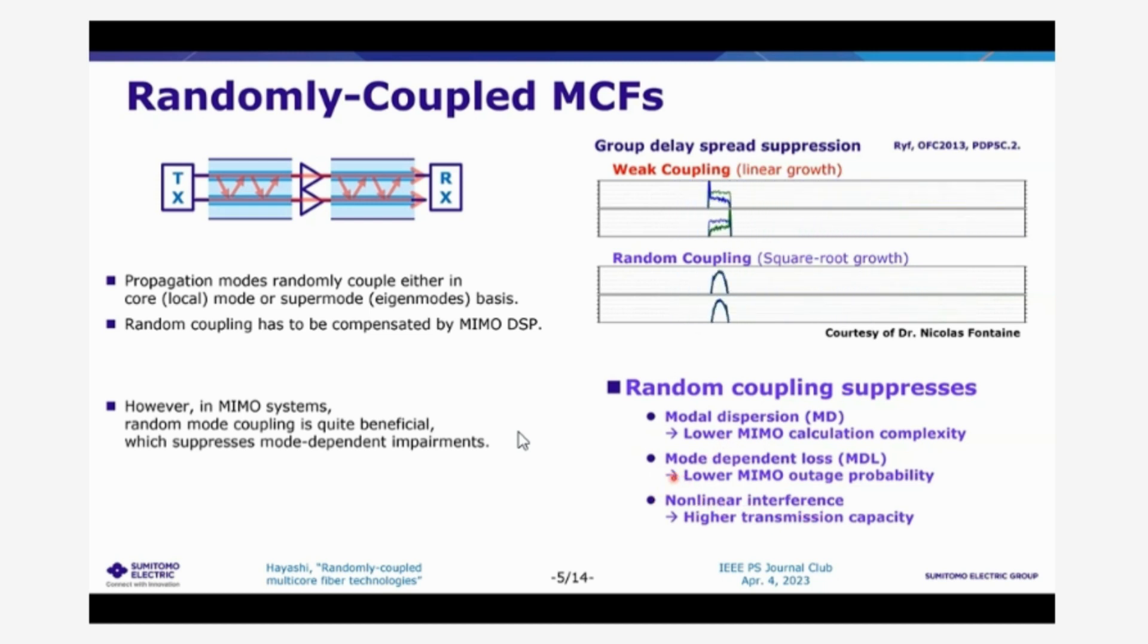Mode dependent loss, and also can suppress non-linear interference. With lower mode dispersion, MIMO calculation complexity can be suppressed and the lower MDL, MIMO outage probability can be suppressed. And with lower non-linear interference, the transmission capacity can be increased.